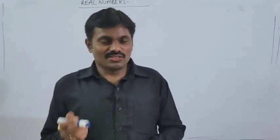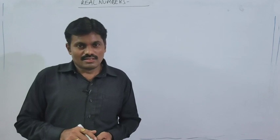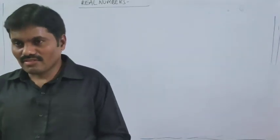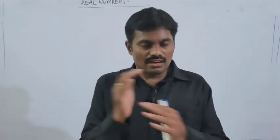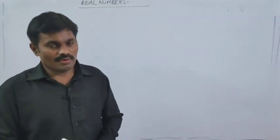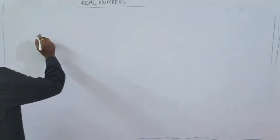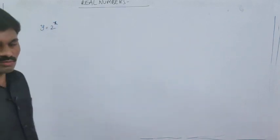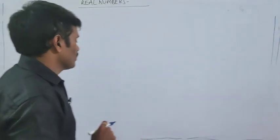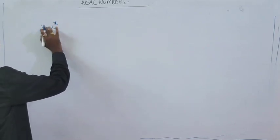Do you think there exist any other types of irrational numbers in the number system? Yes, there are some other types. Before going to that topic, we need to recall some laws of exponents. Consider equations in exponential form — for example: y is equal to 4x, y is equal to a to the power of x, y is equal to 2 divided to the power x. How is the relation established between x and y?